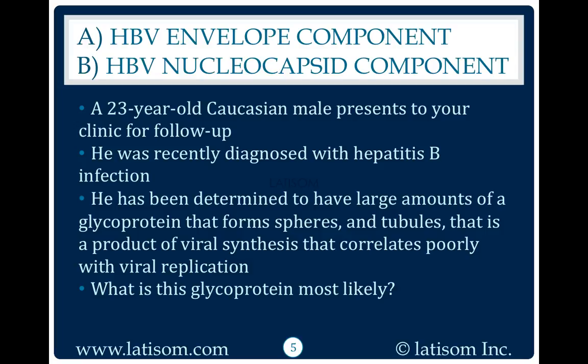This glycoprotein correlates poorly with viral replication. What is this glycoprotein most likely? The answer is the HBV envelope component. The hepatitis B virion is a spherical double-shelled particle that consists of an outer lipid envelope.